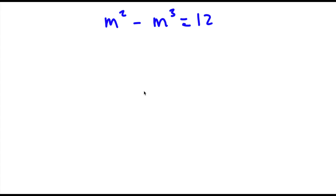Hey guys, welcome back to Click Academics. In today's video I'm going to be teaching you guys how to solve this algebraic equation. I have m to the power of 2 minus m to the power of 3 is equal to 12.